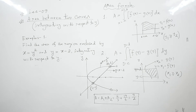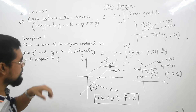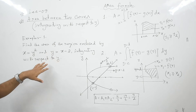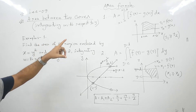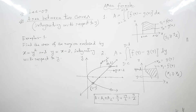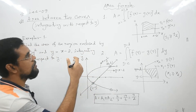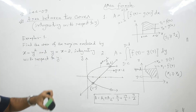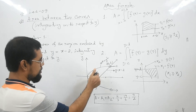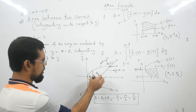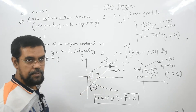If you remember from our previous lecture, we solved the same problem but integrating with respect to x, using Formula 1. During that solution, we divided the whole region into two parts, A1 and A2, and calculated the area of each region separately.